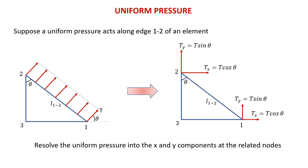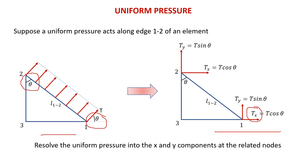Now let's discuss about pressure loading for the case of uniform distributed pressure. Suppose a uniform pressure acts along edge H12 of an element as shown. The first thing we have to do is determine the angle theta. Once theta is determined, we resolve the uniform pressure into X and Y components at the related nodes — named TX for the X component and TY for the Y component.